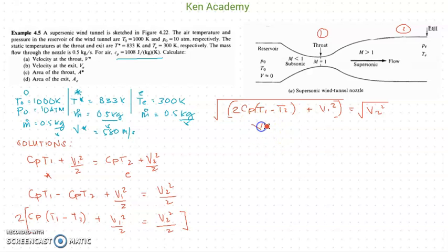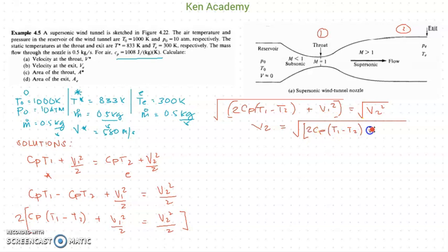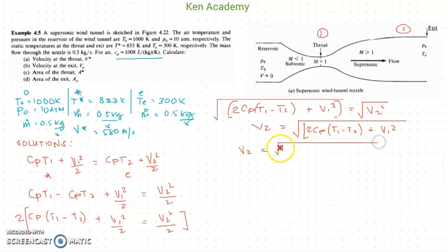We now have our equation to get the velocity at the exit. Multiplying both sides by 2 and taking the square root, it is given by: V2 = √[2·cp·(T1 − T2) + V1²]. Now substituting known values, cp equals 1008.